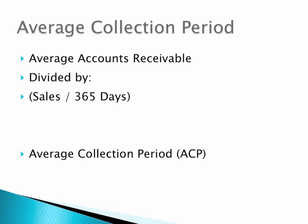Add to that the average collection period, which is simply the average accounts receivable divided by daily sales — annual sales divided by 365 days. That equals the average collection period, which estimates how many days it's taking on average for your customers to pay. It's also called days sales outstanding, just for clarification purposes.